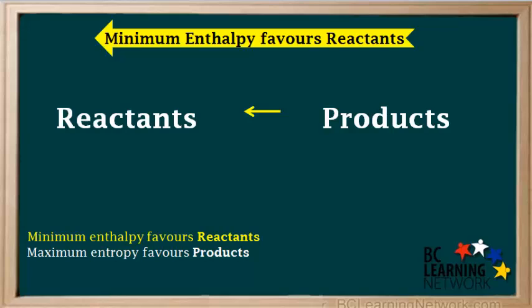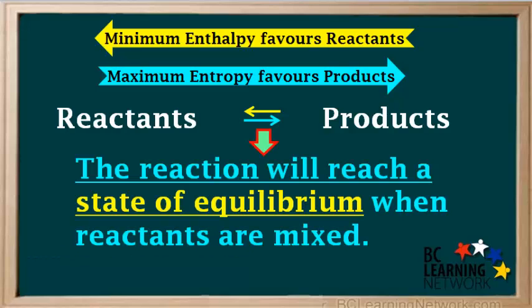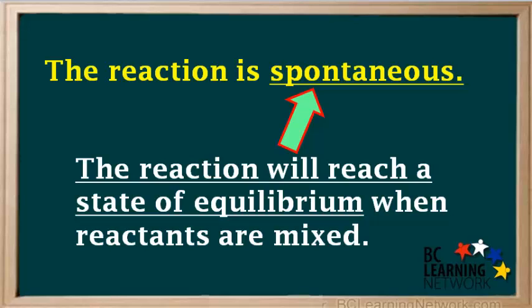Remember, in cases where minimum enthalpy favors reactants and maximum entropy favors products, the reaction will reach a state of equilibrium where both some reactants and some products will be present. So when the reactants are first mixed, they will react with each other and we'll notice something happening until equilibrium is reached. Since something happens, we can say that this reaction is spontaneous.